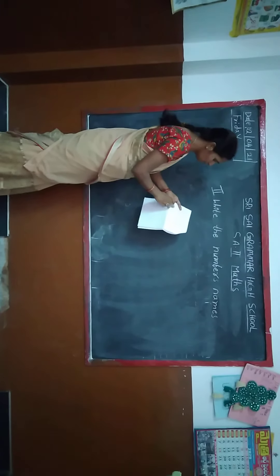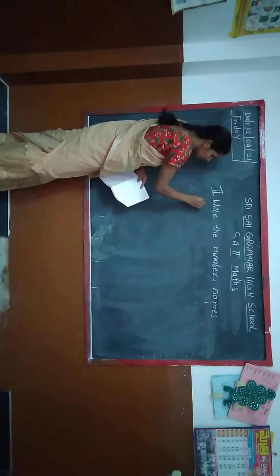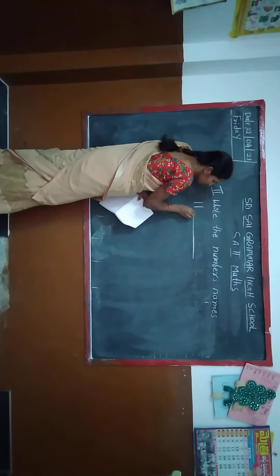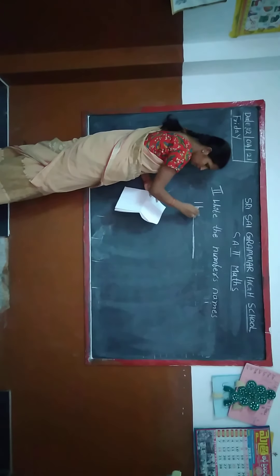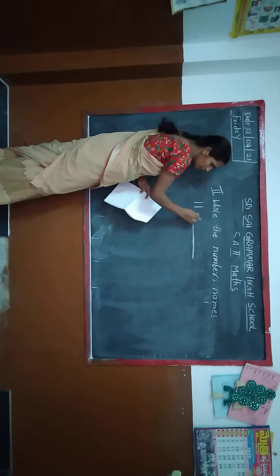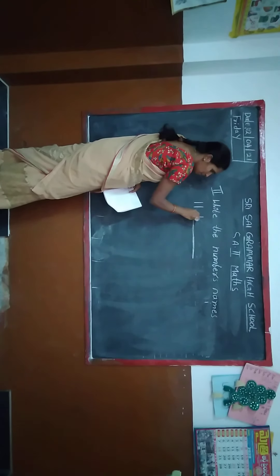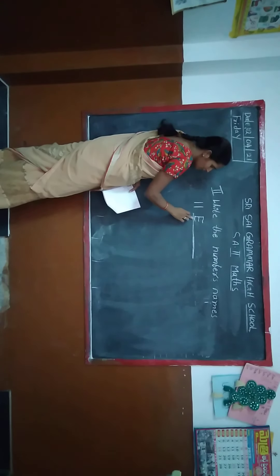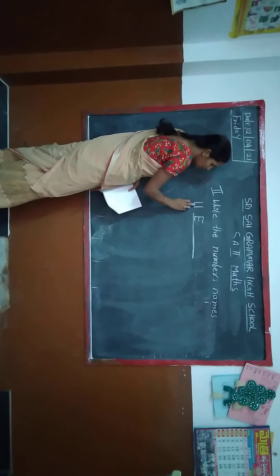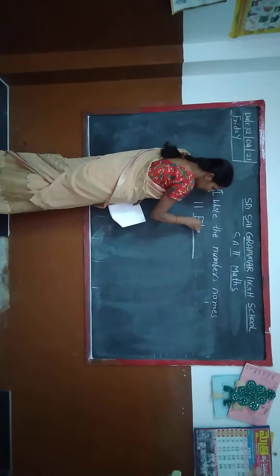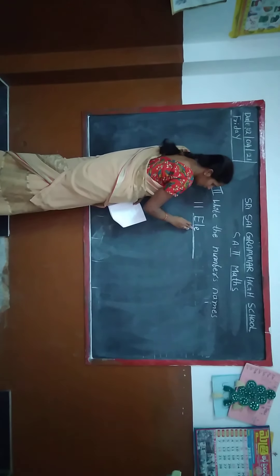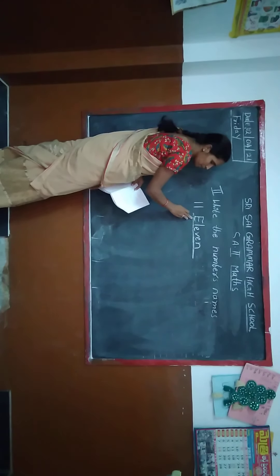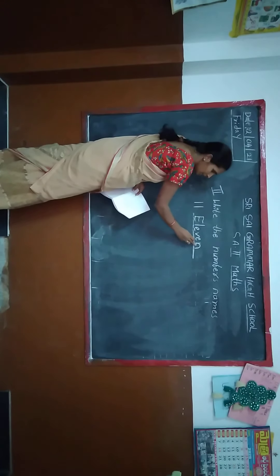1st given number — what is this number? 11. Number name right now: E-L-E-V-E-N. 11. Next number — what is this number? 18.